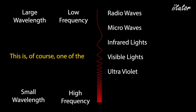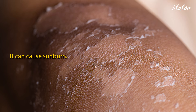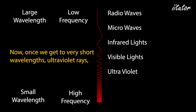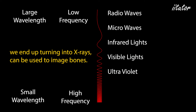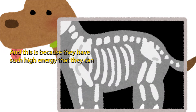Ultraviolet is one of the types of electromagnetic radiation that reaches us from the sun and can cause sunburn. Once we get to very short wavelength ultraviolet rays, we reach x-rays, which can be used to image bones because they have such high energy that they pass straight through soft tissue and can be detected on the other side.